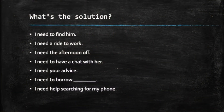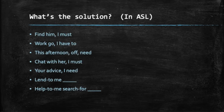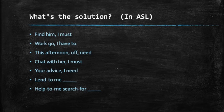Now that you've set up the problem, you are ready to explain what kind of solution you are seeking. Here are some examples written in English. I will demonstrate these sentences in ASL — take note: the need or must sign often comes last.